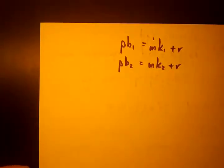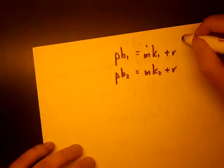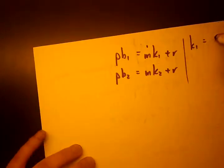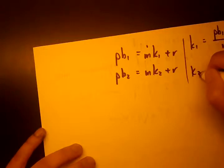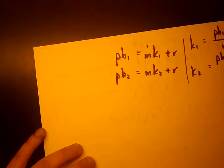Now what we're going to do is solve for K, the respective K in each one. We're going to say K1 equals P times B1 minus R over M. And K2 equals P times B2 minus R over M.